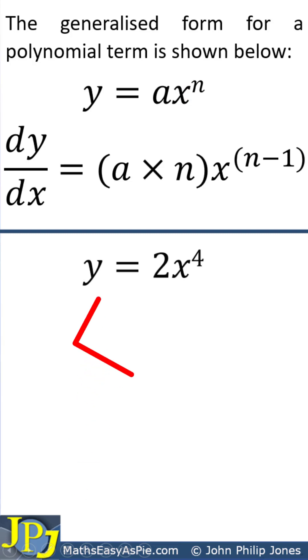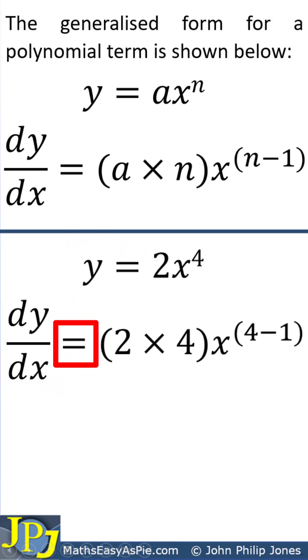Consider this example. We write down dy/dx equals, and here you can see it's 2 times 4, which is this 2 times this 4. We write down the x, and here you can see it's 4 minus 1, which means we're reducing this 4 here by 1.